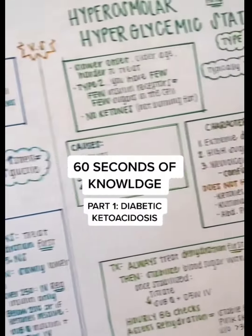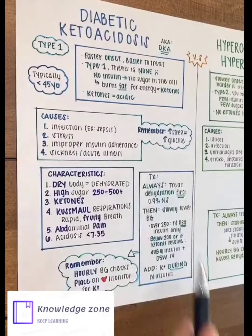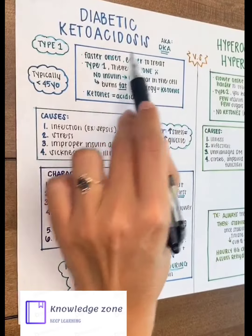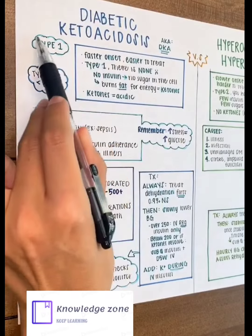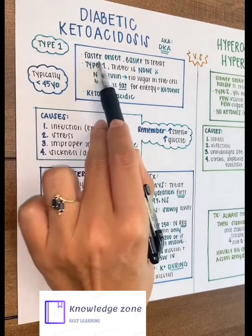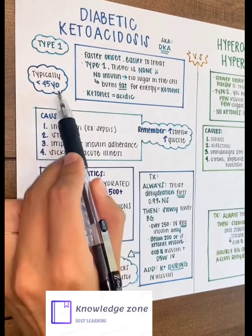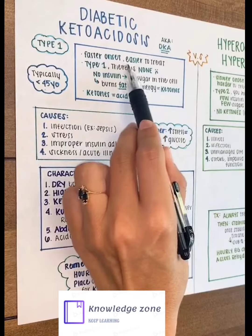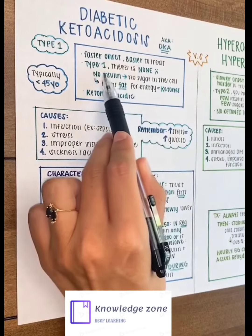This is a part series on DKA and HHS. Diabetic ketoacidosis is typically seen in patients with type 1 diabetes. It presents as a faster onset, usually in the younger populations, and because of this, it's easier to treat.